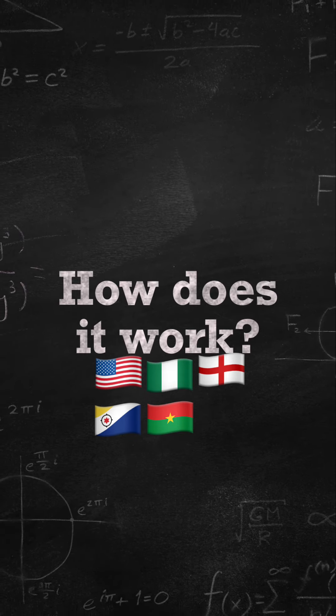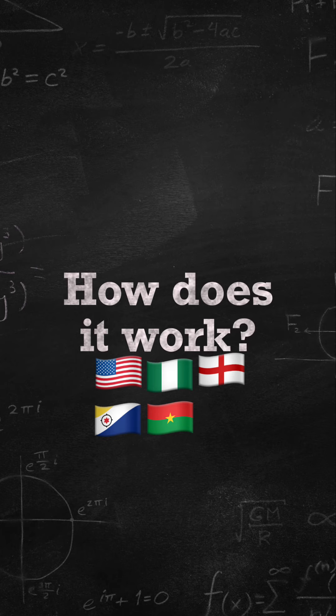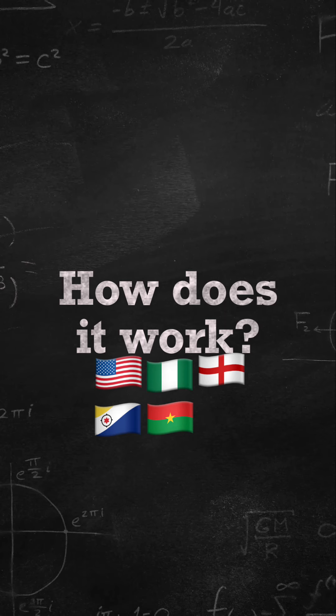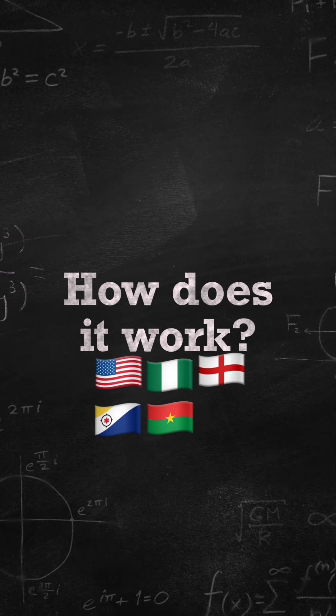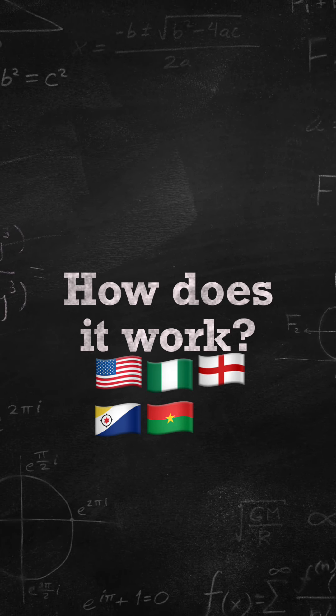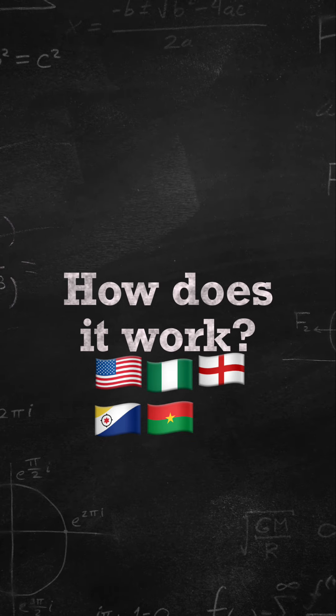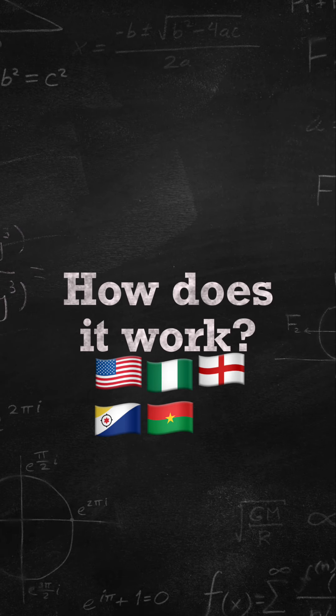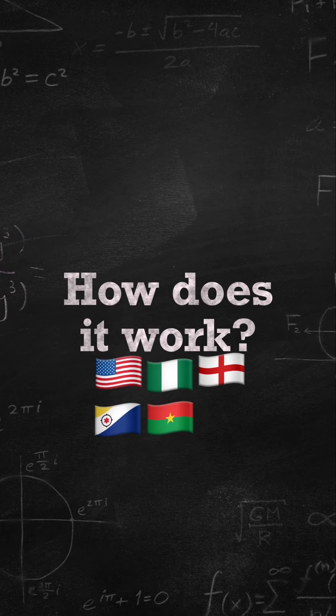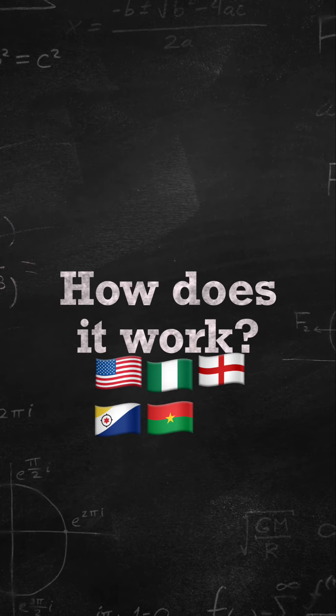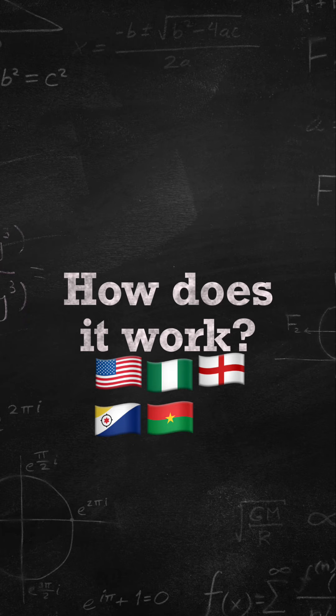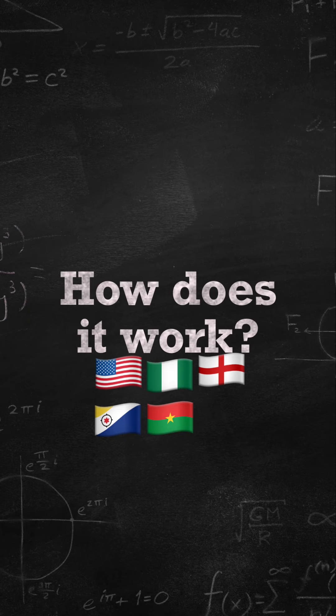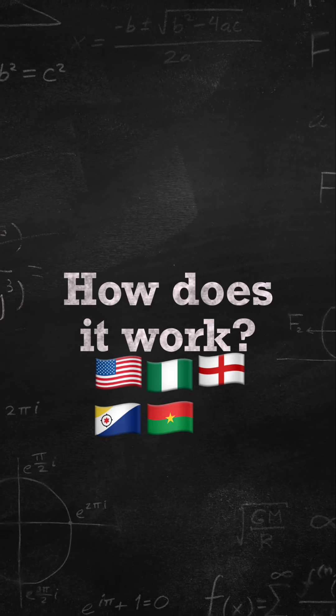We know that according to the Sustainable Development Goals, the number one goal is no poverty and number 13 goal is climate action. Yes, we want to have a friendly environment, but don't forget poverty is a canker worm in Africa. What are the major steps that these world leaders are taking to make sure that poverty is mitigated in Africa as a whole?